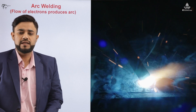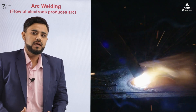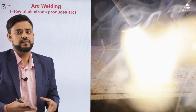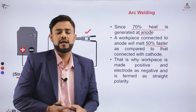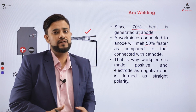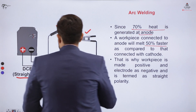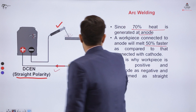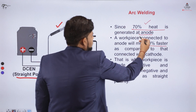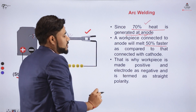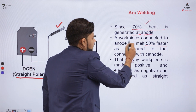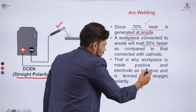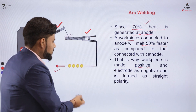The video on the screen shows the flow of electrons — electrons flow from the electrode to the surface of the workpiece, and the electrode is heated because of that electron flow. Coming to the connections of the arc welding process, we have two connections: direct current electrode negative and direct current electrode positive. In direct current electrode negative, the electrode is connected to the negative terminal and the workpiece to the positive terminal. 70% of the heat is liberated at the anode, so the workpiece connected at the anode will melt approximately 50% faster compared to when it is connected to the cathode terminal. That is why this combination — direct current electrode negative, or straight polarity — is generally used.